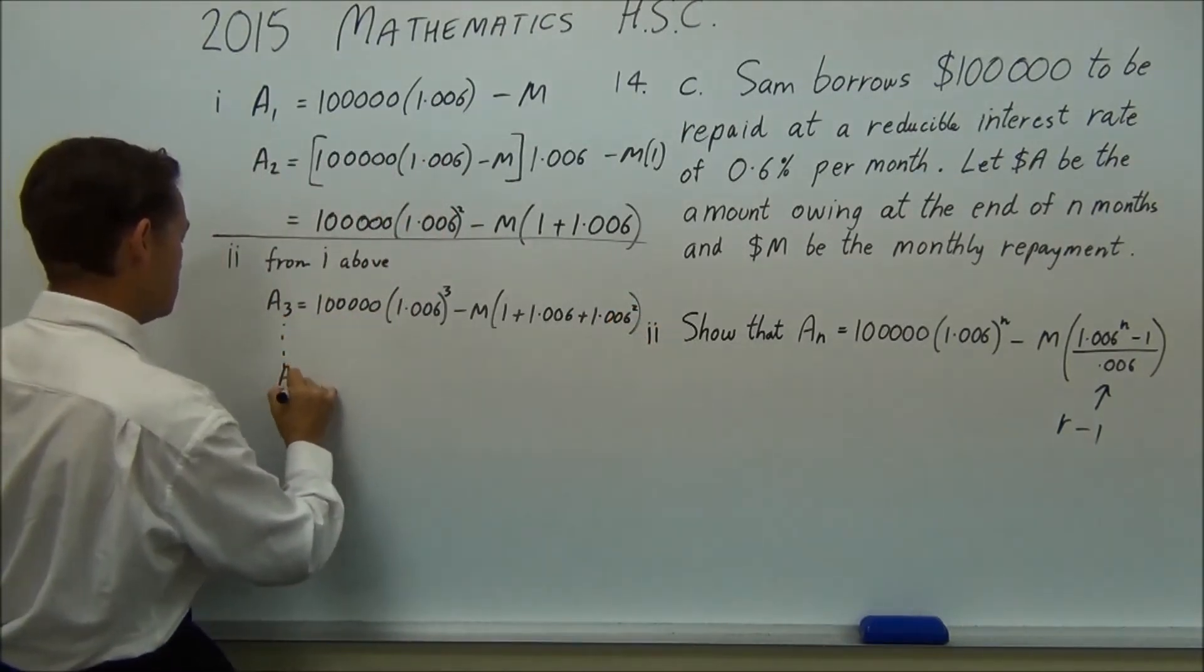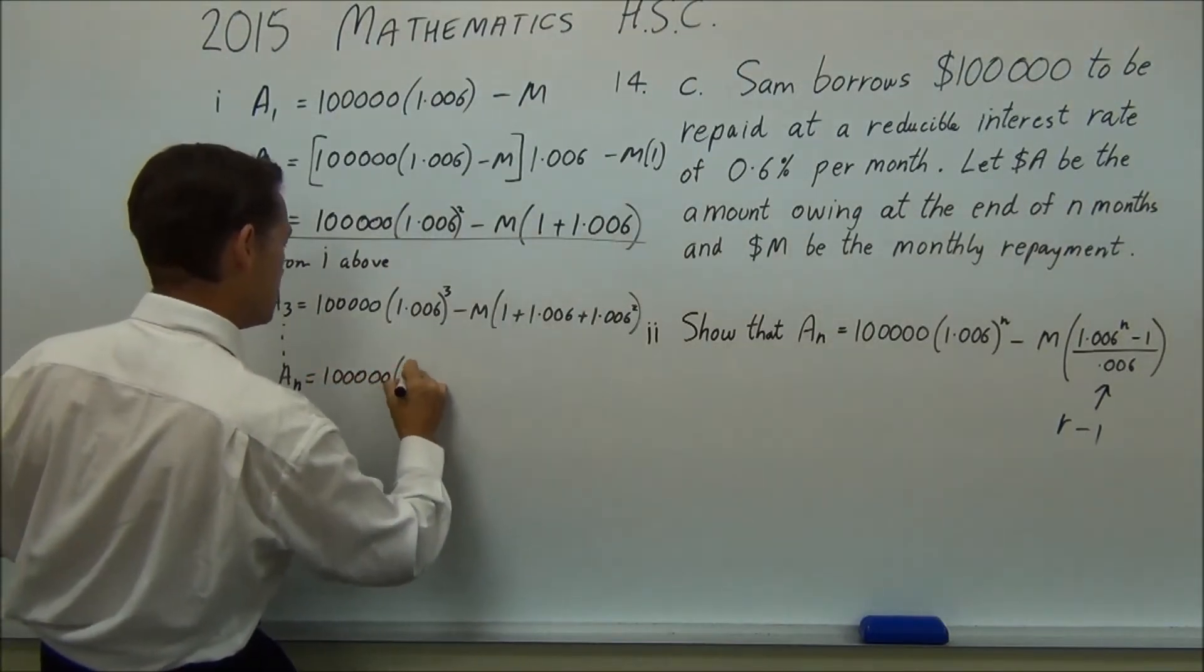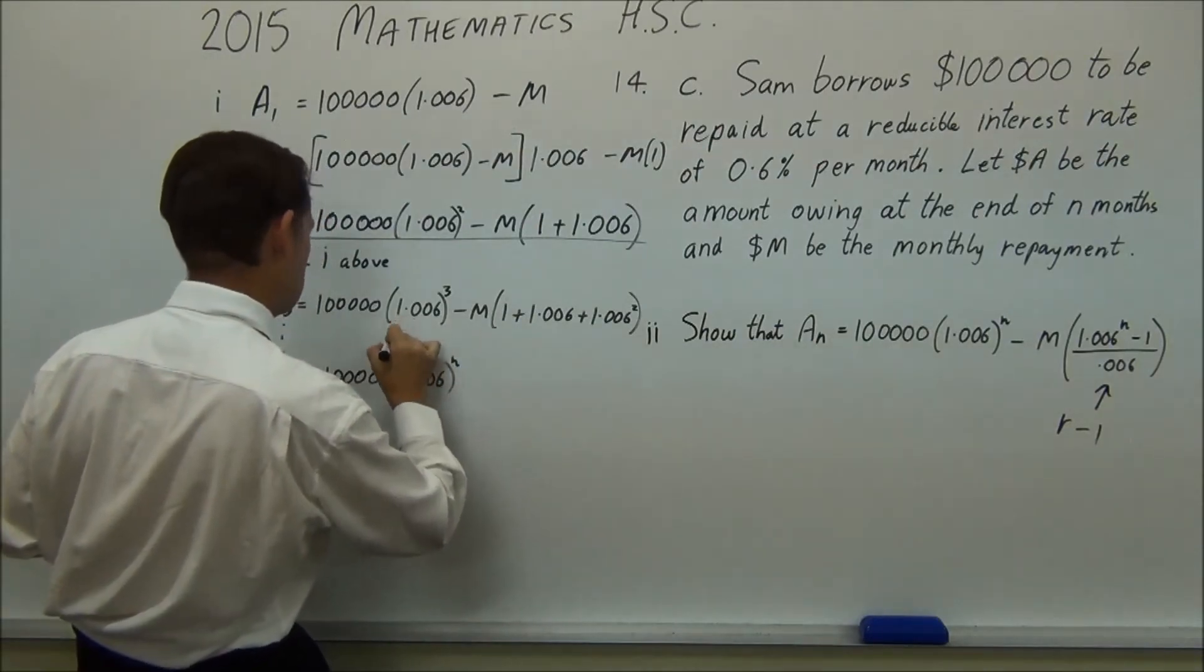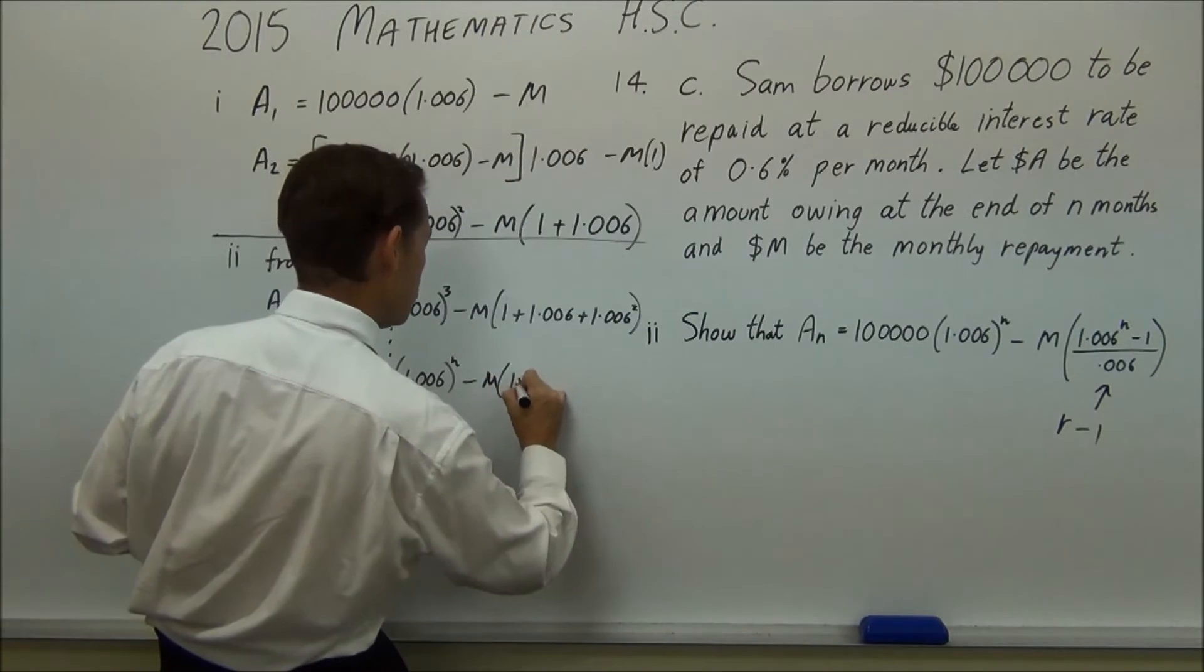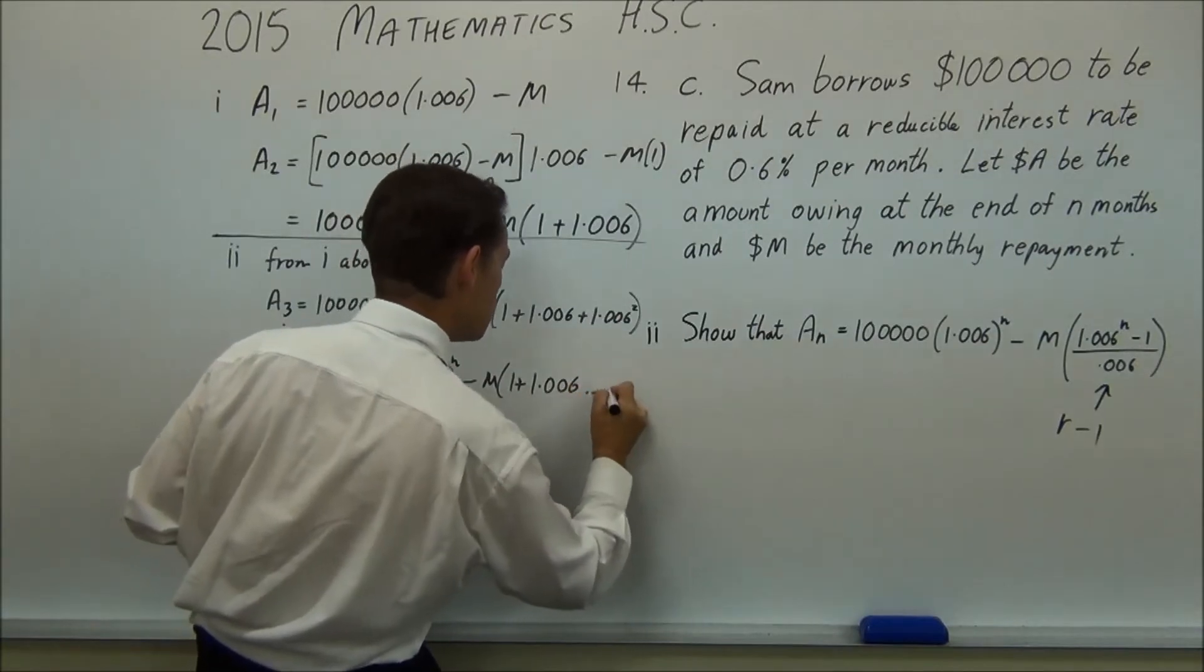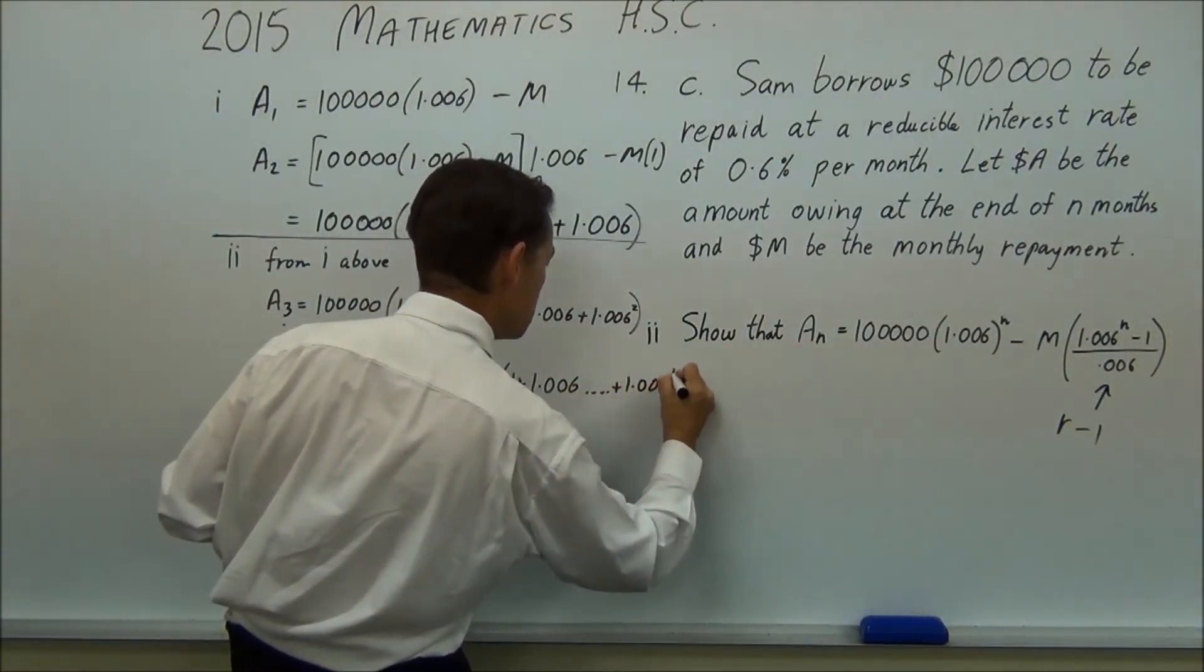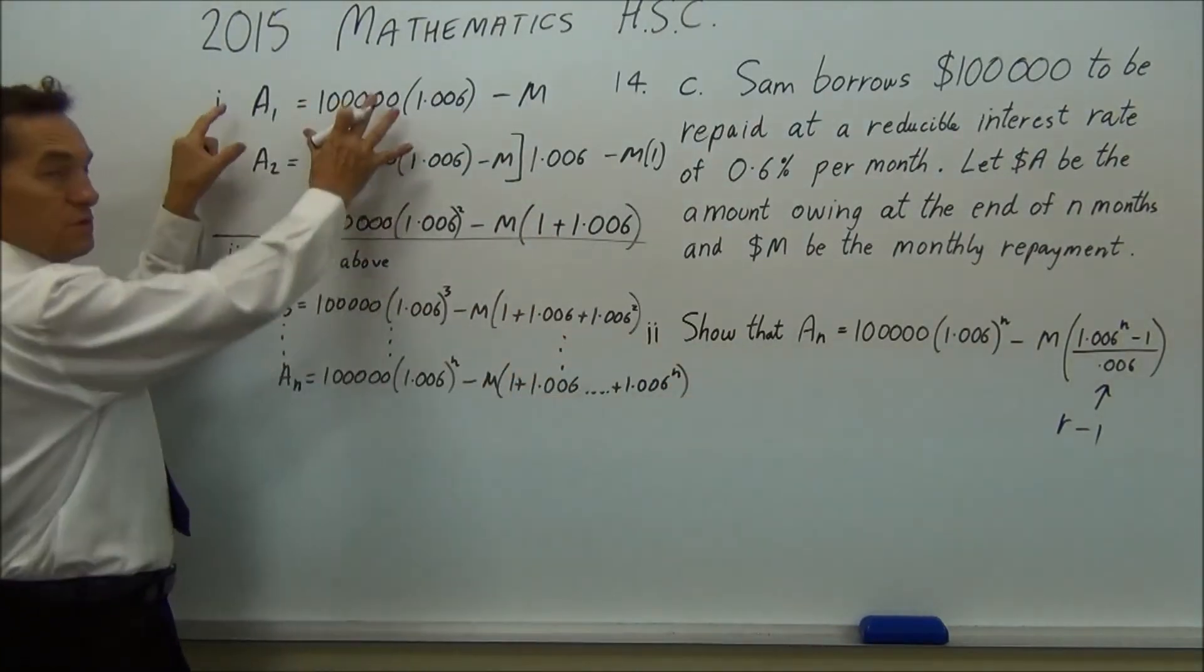Down to An equals 100,000 times 1.006 to the N, dot dot dot, minus M times 1 plus 1.006 plus 1.006 to the N, dot dot dot. Okay, so I would use that,